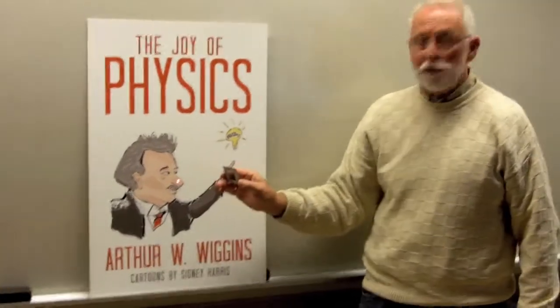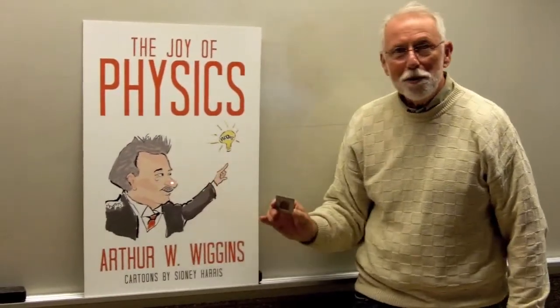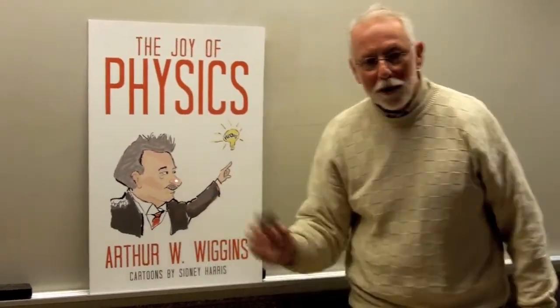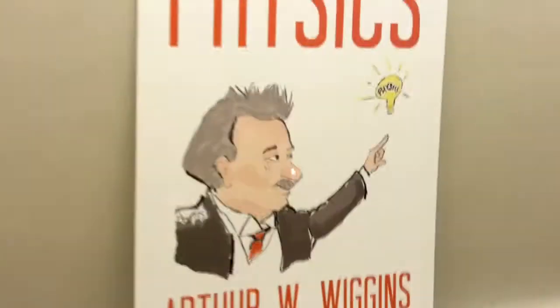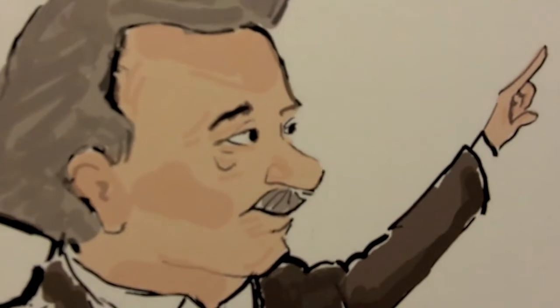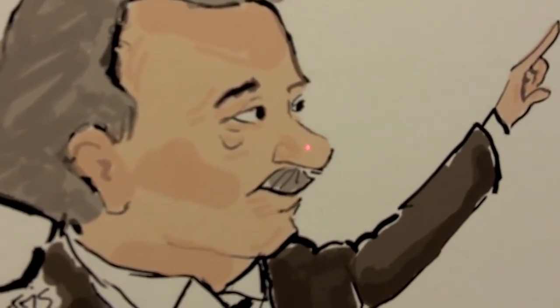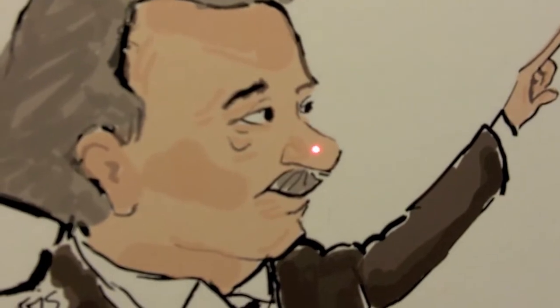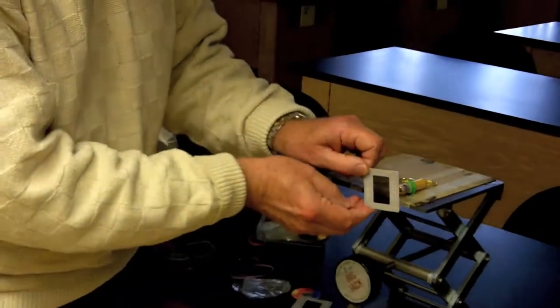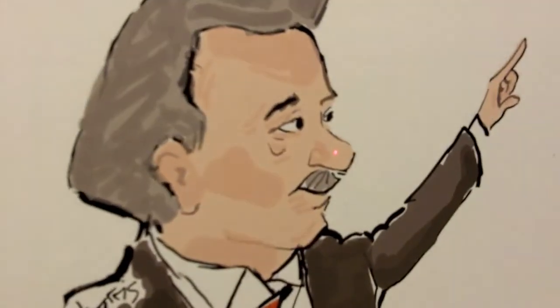I've got the laser beam set up nicely on Albert Einstein's nose. I'll put the polarizing filter right next to the laser beam — and it's a little dimmer. I have a second polarizing filter; I'll try that one and see what the second polarizing filter does. And it's again dimmer.